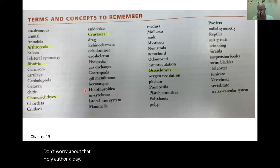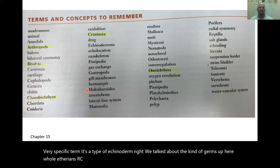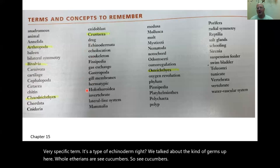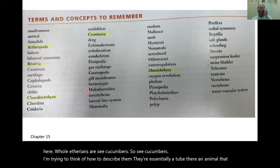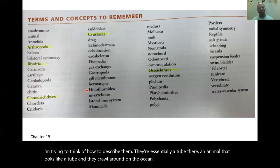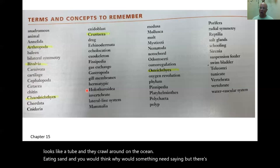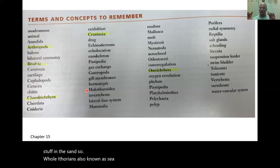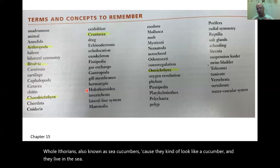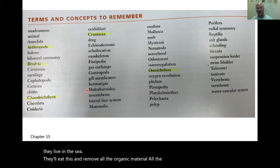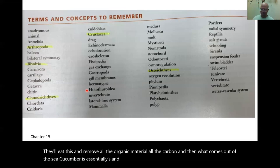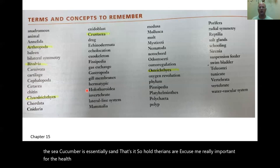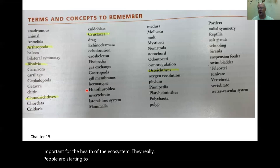Holothuridae is a very specific term — it's a type of echinoderm. Holothurians are sea cucumbers. They're essentially a tube-shaped animal that crawls around on the ocean floor eating sand. There are things in the sand — a lot of dissolved organic carbon. A sea cucumber eats the sand, removes all the organic material and carbon, and what comes out is essentially just sand. Holothurians are really important for the health of the ecosystem, especially coral reefs.